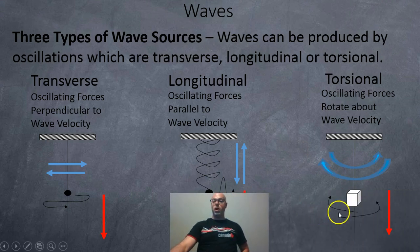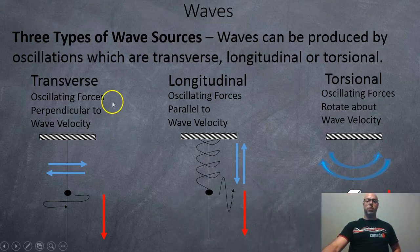Or you can have torsional, so something twisting around one way and then twisting the other, and that makes a wave. But usually we just focus on the transverse and the longitudinal waves.